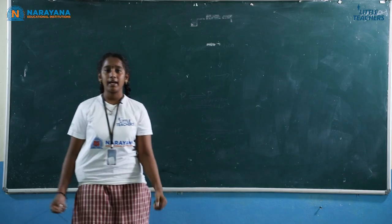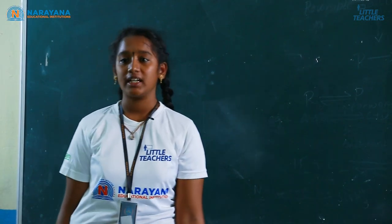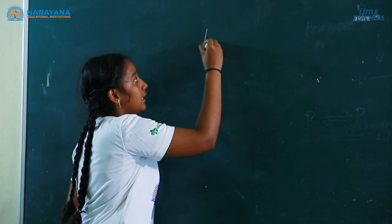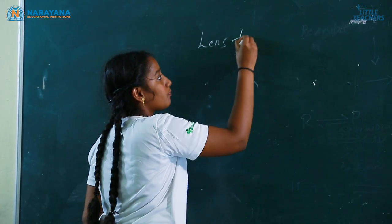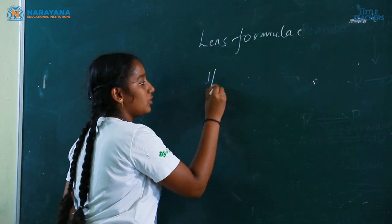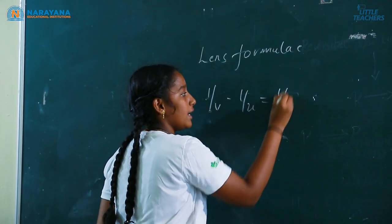Firstly, what is meant by a lens? A lens is a transmissive optical device. The lens formula is 1/V - 1/U = 1/F.